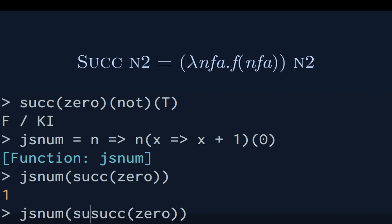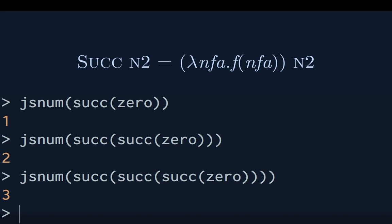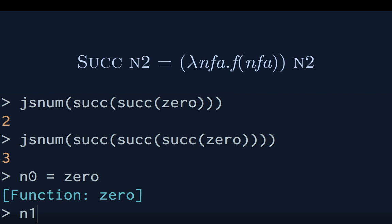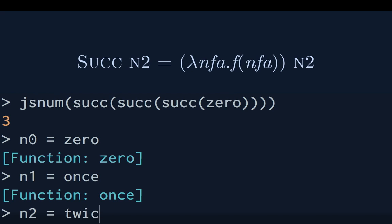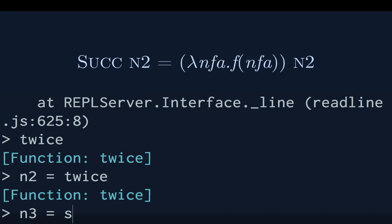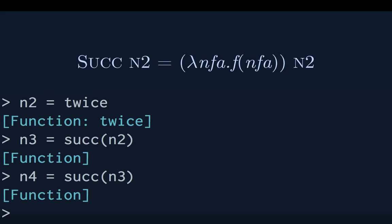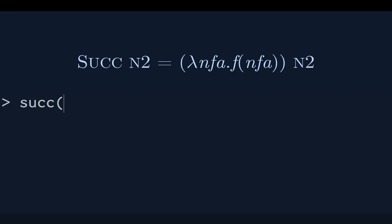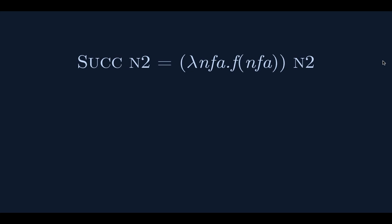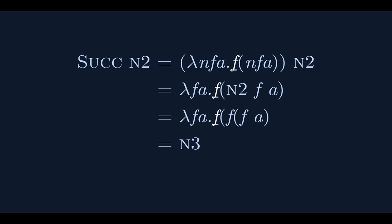Successor of successor of zero is two. Successor of successor of successor of zero is three. Let's store these: n0 equals zero, n1 equals once, n2 equals twice, n3 equals the successor of n2, n4 is the successor of n3. The successor of n4 ought to be five — and it is. This demonstrates that the new f gets tacked on, and that's how we get a successor.